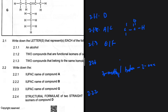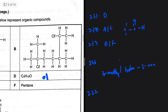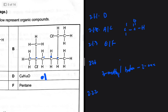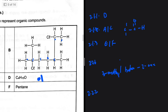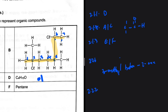Question 2.2.2: the IUPAC name of compound B — a haloalkane. Let's find the longest carbon chain. Going across: one, two, three, four, five, six. Going up: one, two, three, four, five, six, seven. So the longest carbon chain is seven carbons — that is heptane, since it is a haloalkane.